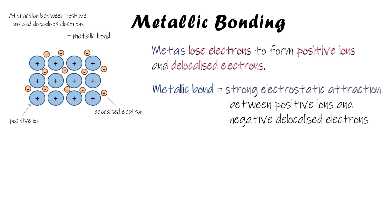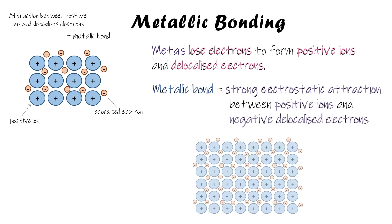It's the same key phrase as with ionic bonding, but this time instead of between positive and negative ions it's an attraction between the positive ions and the negative delocalized electrons. That attraction holds the metal together and helps it keep its structure.